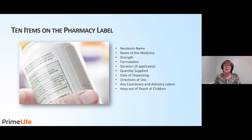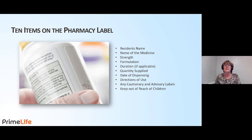The quantity supplied: we must always have the correct quantity documented on the EMAR or the paper MAR chart. This helps us when we're going back and doing our audit trails. The date of dispensing is the date on the medication label — the date that the pharmacy actually dispensed the item. The directions for use: how the medication is to be administered, for example once a day or twice a day. And cautionary and advisory labels, which often state things like 'with or without food' or '30 minutes before any other medication'.